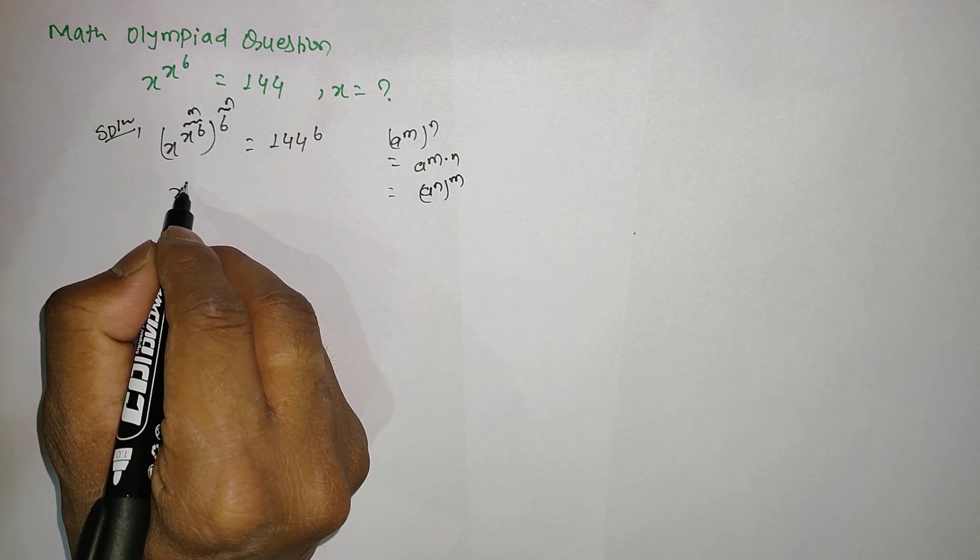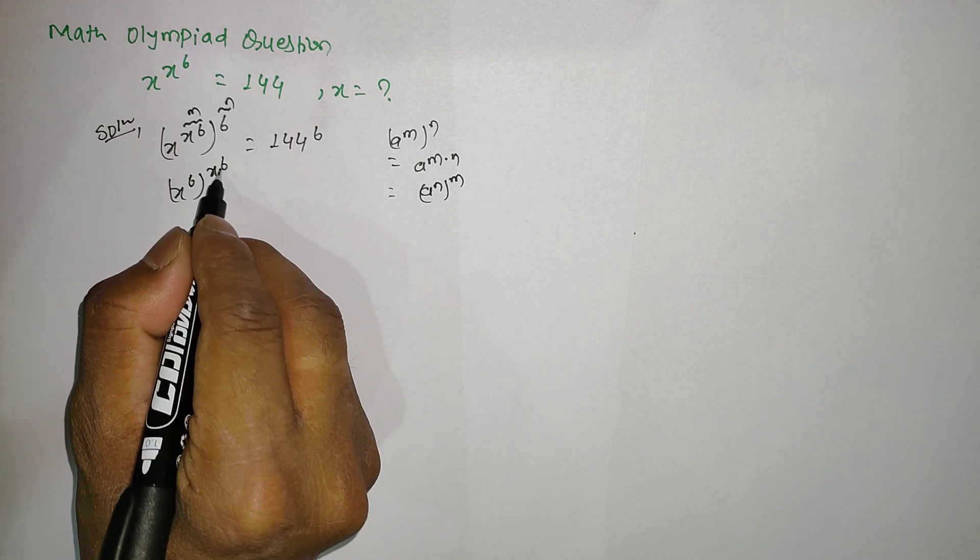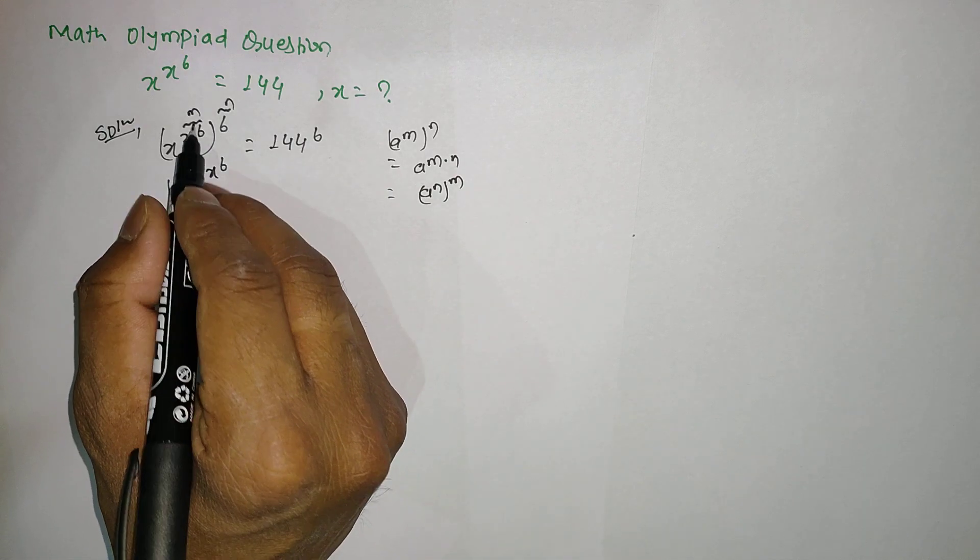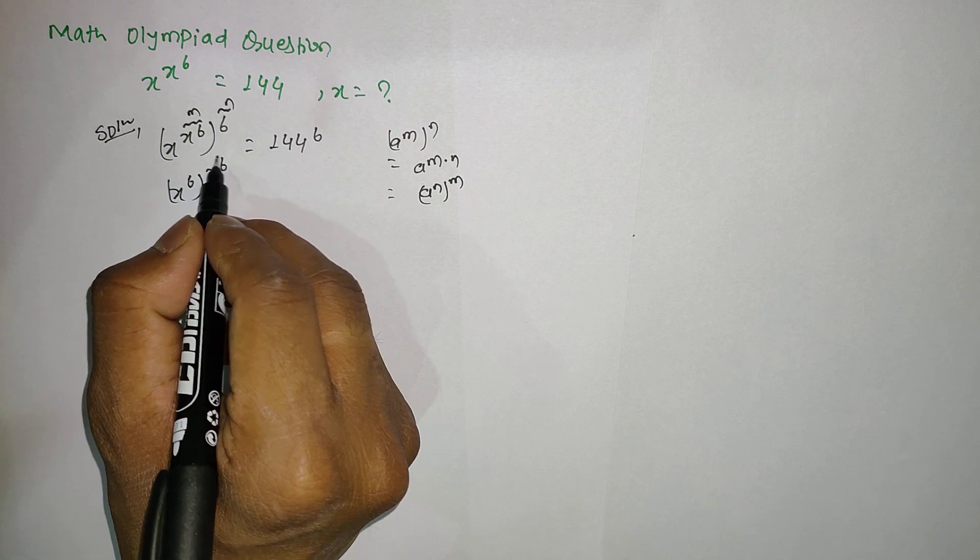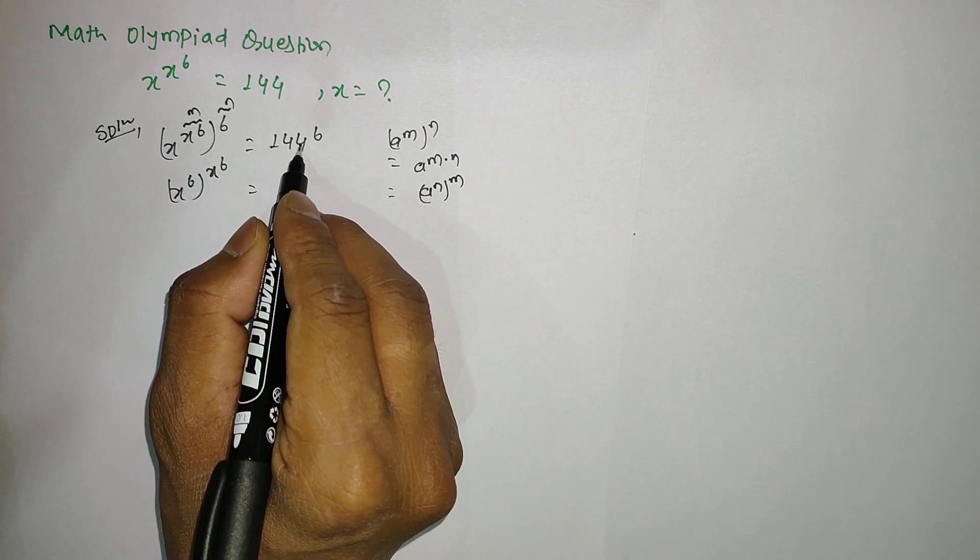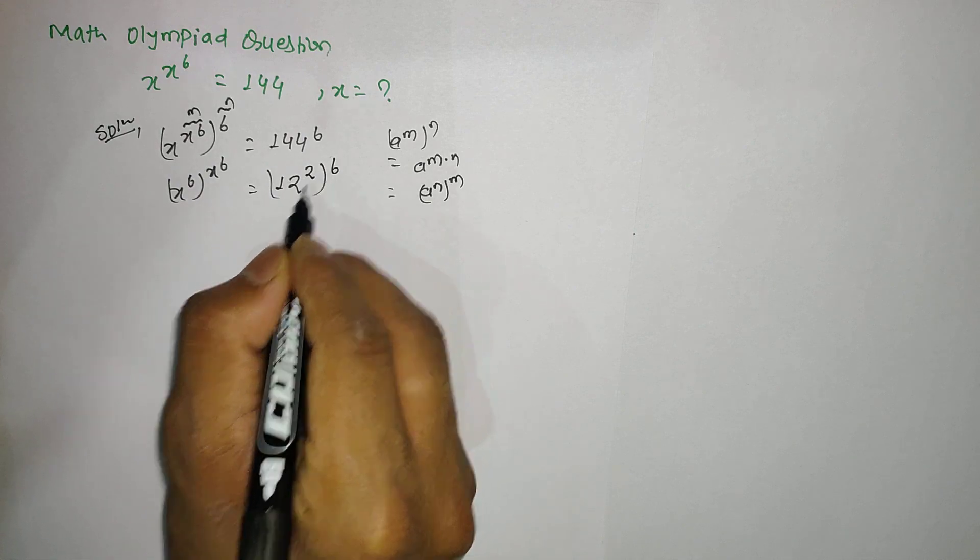So here I can write x power 6 to the power x power 6 according to this rule, because n equals 6, we can replace it. And here we can see that 144 is the square of 12, so 12 power 2 to the whole power 6.